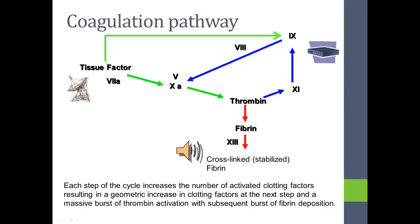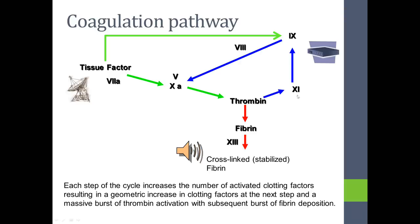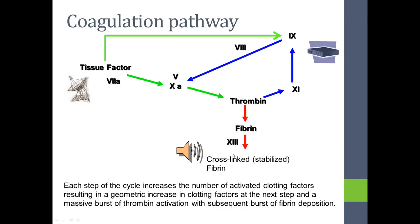Tissue factor is expressed from the broken blood vessel and picked up by factor VII — that's the signal, like a radio antenna. This process goes on without the amplifying loop but does so at a very slow rate, and the clot formed is weak. The amplifying loop, manifested here by the stereo amplifier picture, amplifies the clotting process thousands and thousands of times, resulting in a large burst of activity which creates a large amount of fibrin and a strong cross-linked stabilized clot.